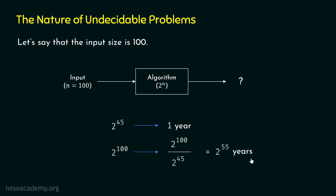So the world's fastest computer is taking 2 to the power of 55 years to execute 2 to the power of 100 instructions. The amount of time the computer is taking is much more than the age of the universe. The age of the universe is nearly 13.8 billion years, which is nearly equal to 2 to the power of 33 years. Here we are getting 2 to the power of 55 years, which is much greater than 2 to the power of 33 years — for an input size of just 100.